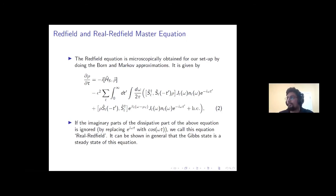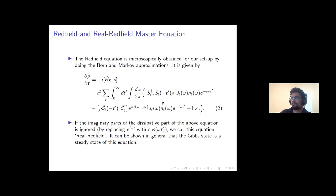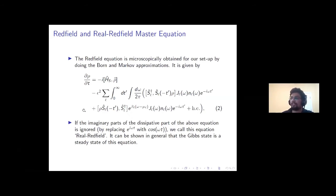The Redfield equation is very well connected to the microscopic setup — you derive it by simply doing the Born and Markov approximation, evaluating the trace over the reservoir, and substituting the operators for your specific system. It has no additional approximations beyond Born and Markov, but it is not guaranteed to preserve positivity, so you might see some density operators that are not positive. Interestingly, if the imaginary parts of the dissipative constants that appear are ignored, one can show that the Gibbs state is a steady state of this equation. When we replace these imaginary parts we call that the real Redfield equation, since only the real parts of the constants are kept.